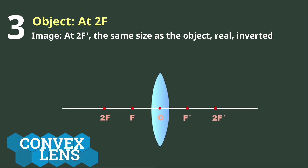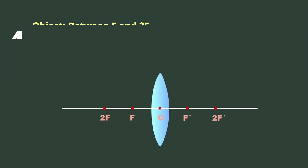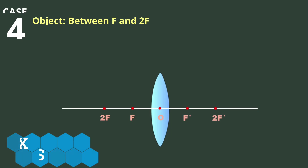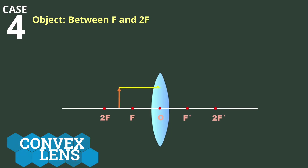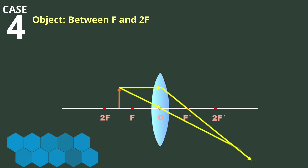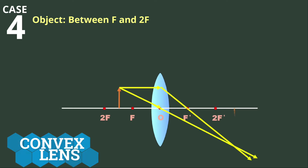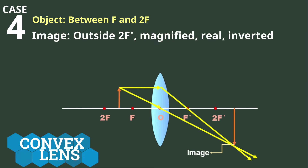For Case 4, the object is located between F and 2F. The light ray parallel to the principal axis passes through the focus F' on the other side of the lens after refraction. The second ray passes through the optical center without any deviation. Notice that the two rays meet outside 2F'. Thus, when the object is located between F and 2F, the image is formed outside 2F' on the other side of the lens.